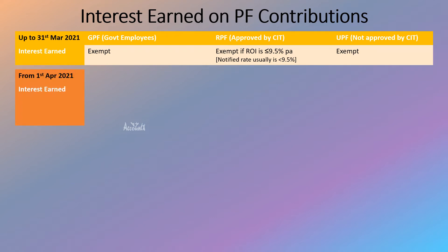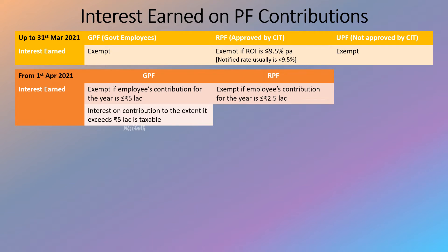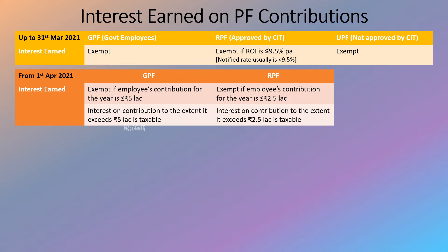With effect from 1st April 2021, new rules apply. For GPF, interest earned is exempt if the employee's contribution for the year is up to 5 lakh — interest on contributions exceeding 5 lakh would be taxable. For RPF, this limit is 2.5 lakh — interest on contributions exceeding 2.5 lakh would be taxable. With respect to UPF, there is no change; interest earned continues to be fully exempt.